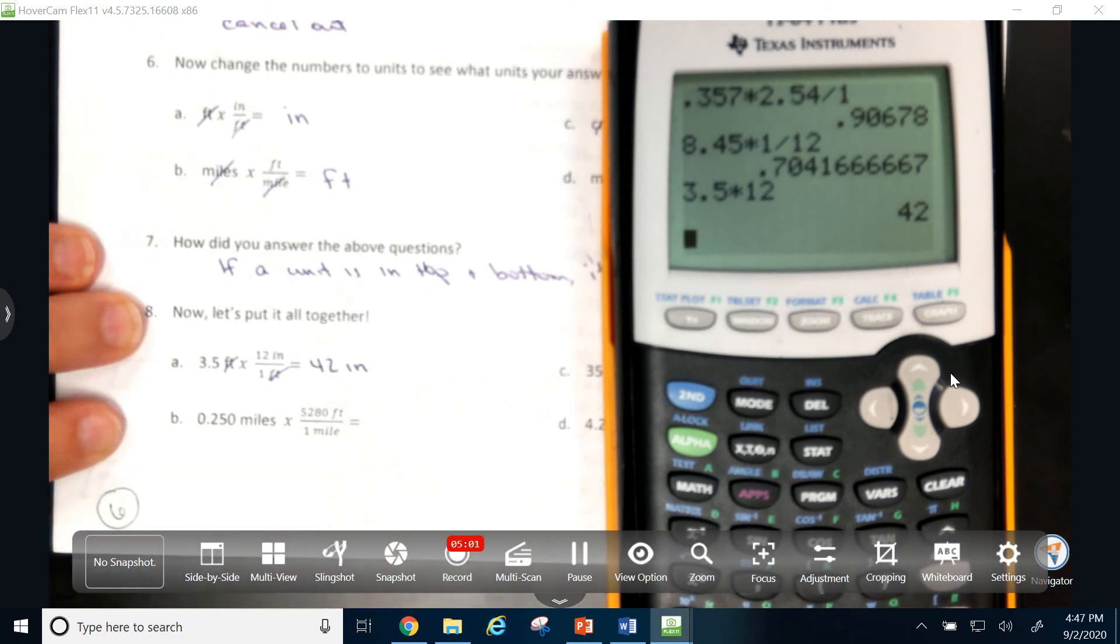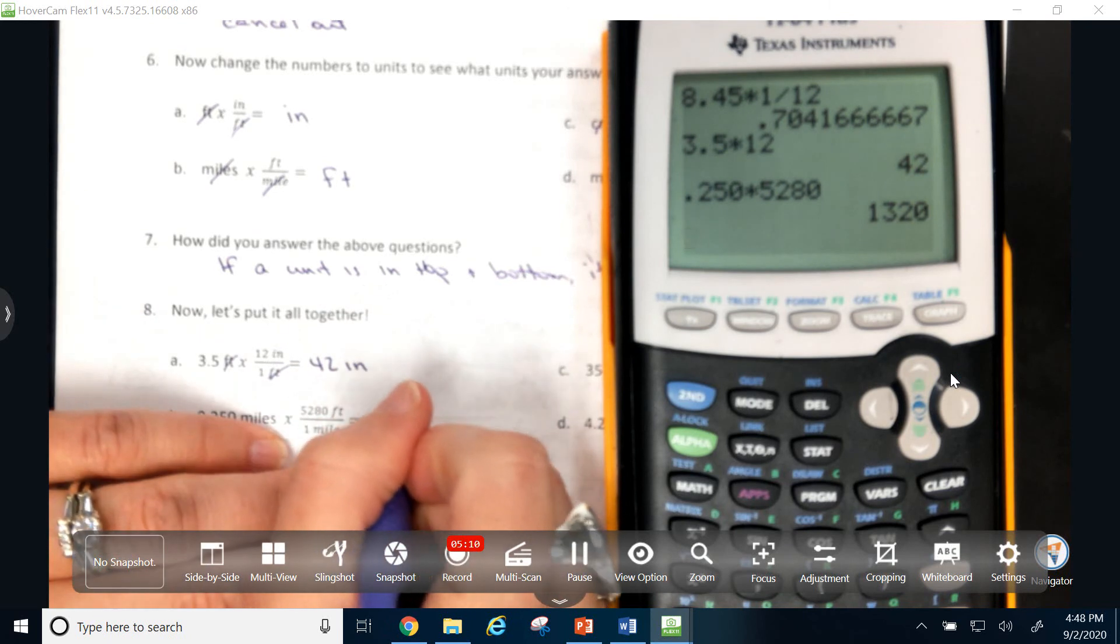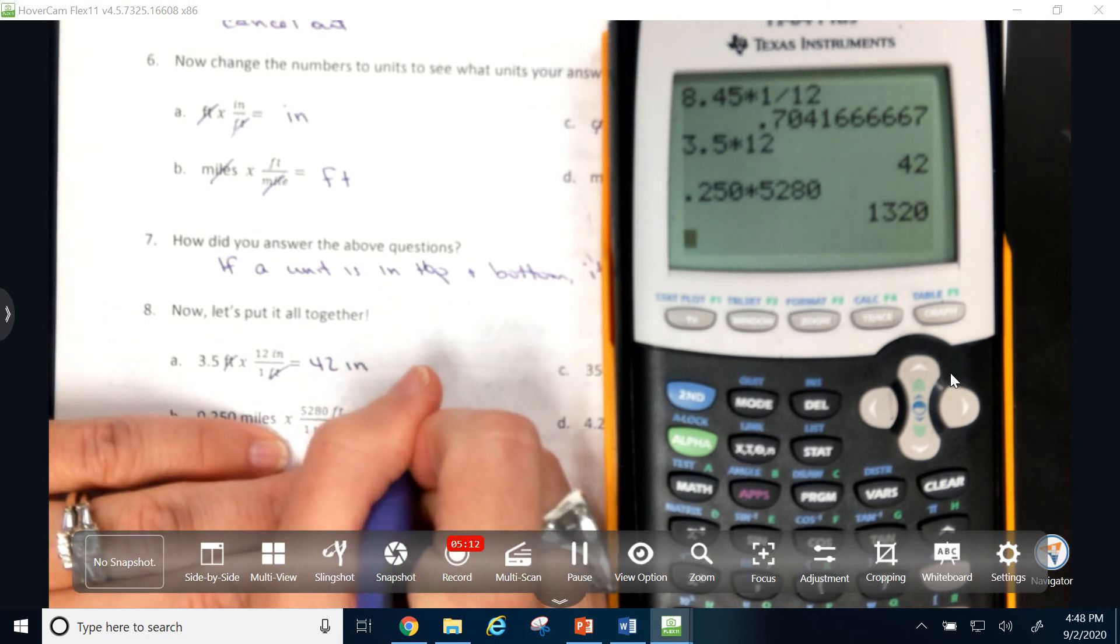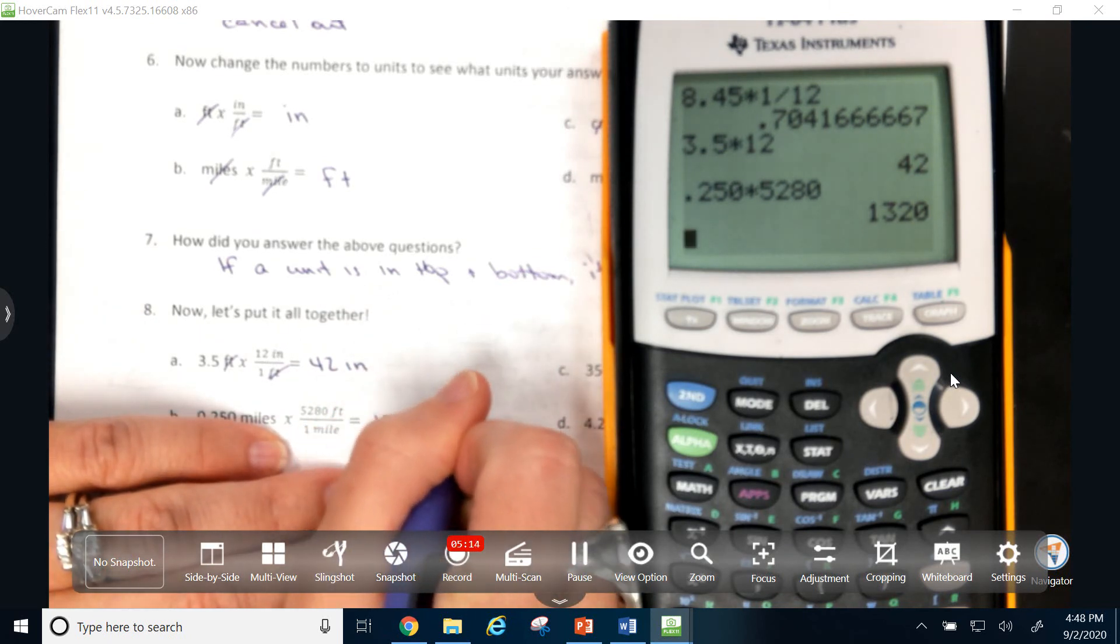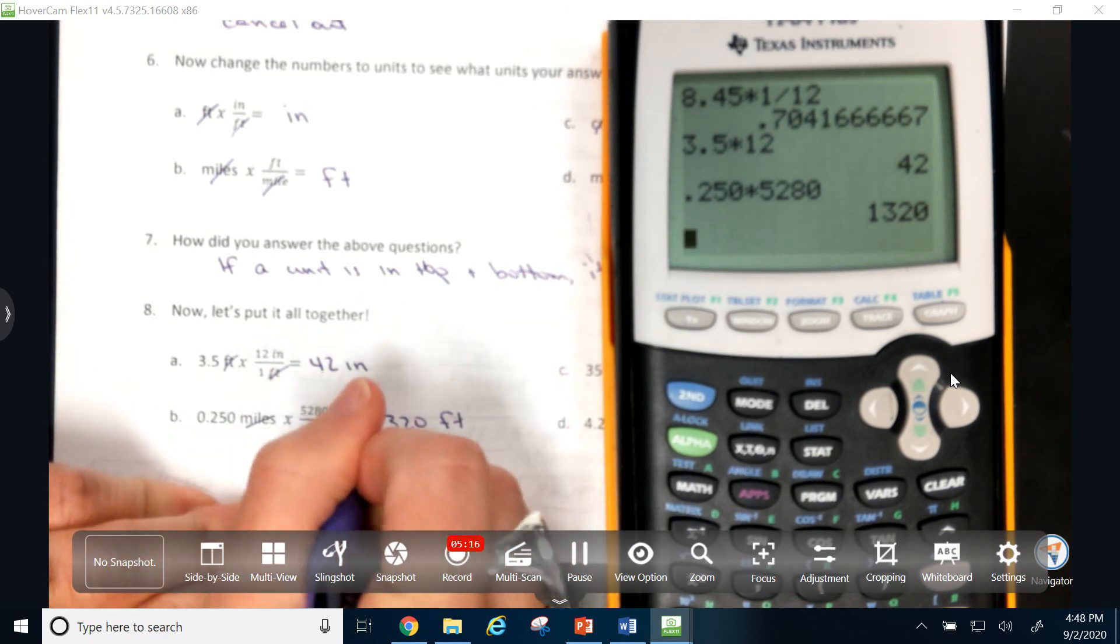Then, I do 0.250 times 52.80 because it's in the top. I can do divide by 1 if I want. I typically don't. And that's 13.20 feet. Because my miles cancel.